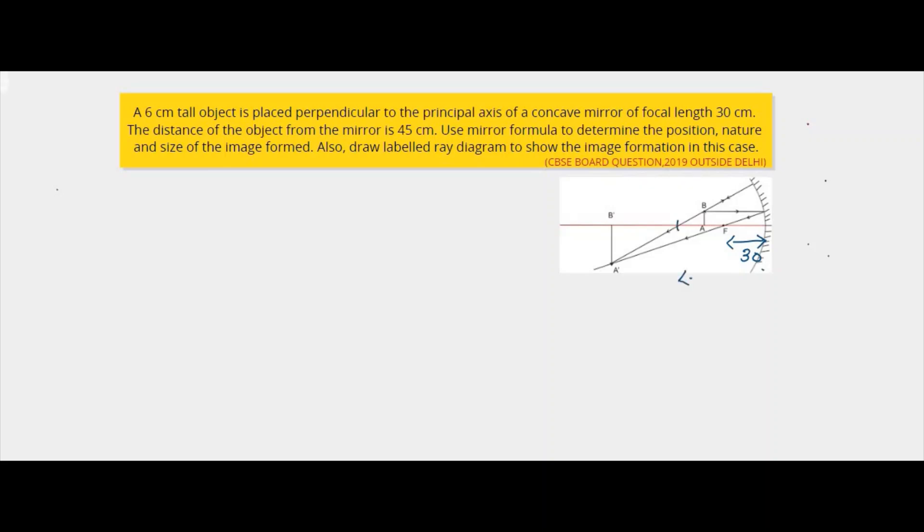So the radius of curvature will be 60 cm. F is 30 and the point C, that is the radius of curvature, is situated at a distance of 60 cm from the pole.